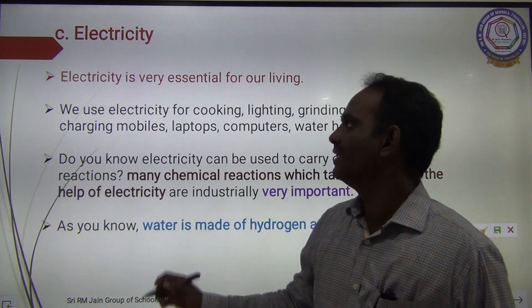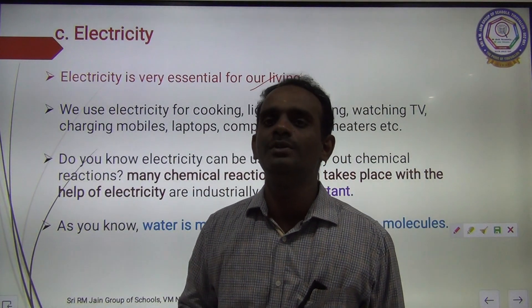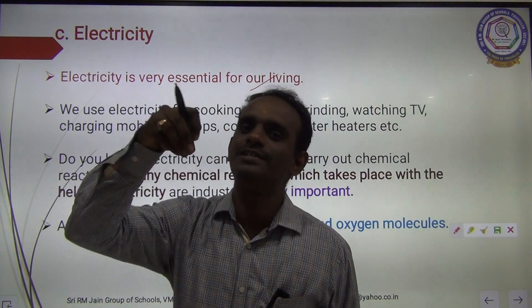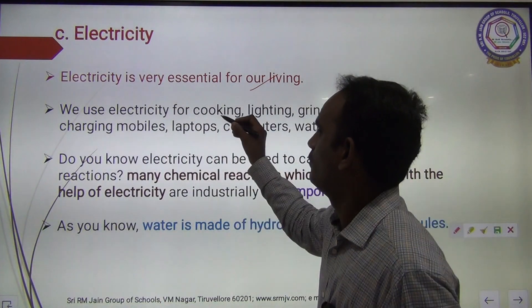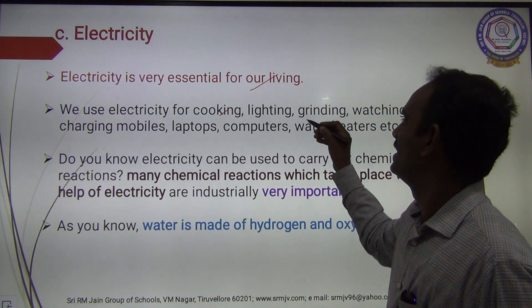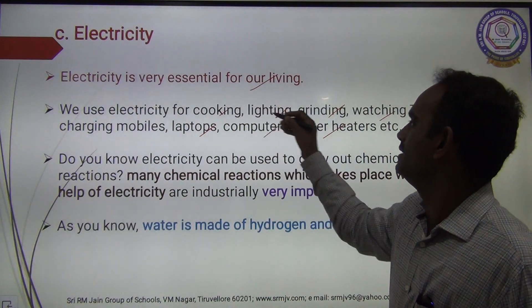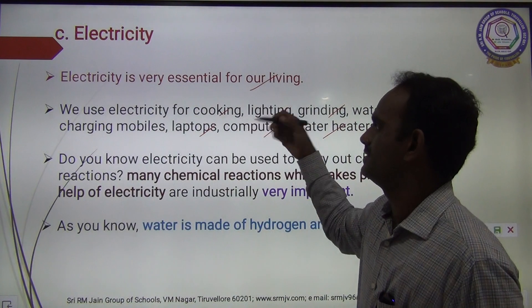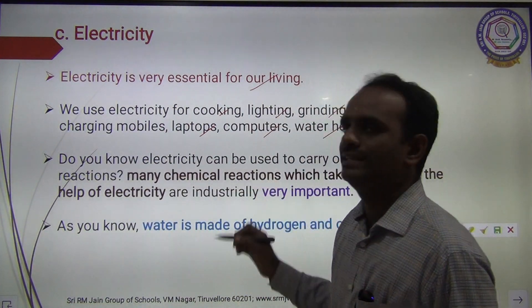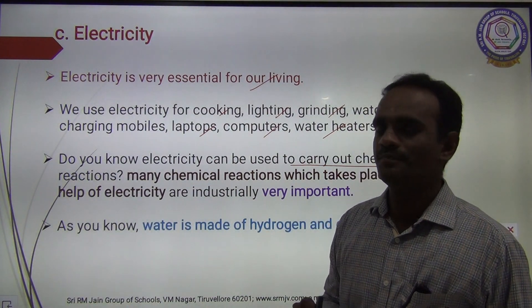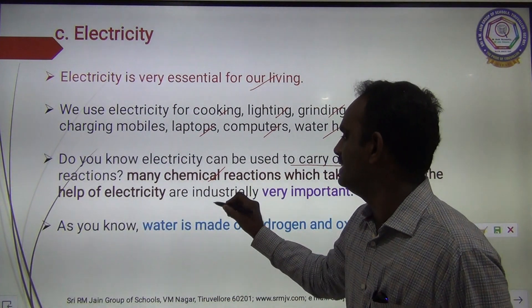Next, we move on to electricity. Electricity is very essential for our life — we use it for cooking, charging cell phones, lighting, grinding, watching TV, laptops, computers, and water heaters. Do you know electricity can be used to carry out chemical reactions? Many chemical reactions that take place with the help of electric current are industrially very important.